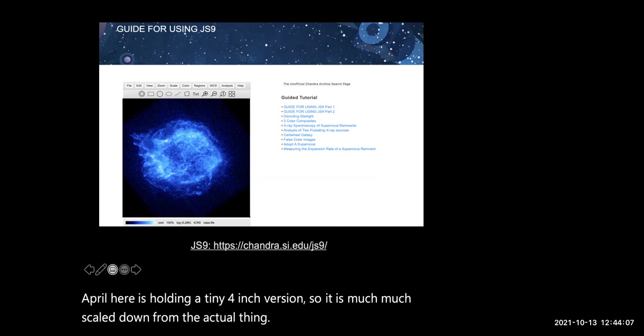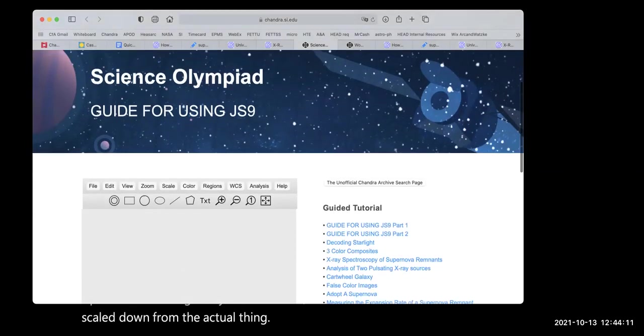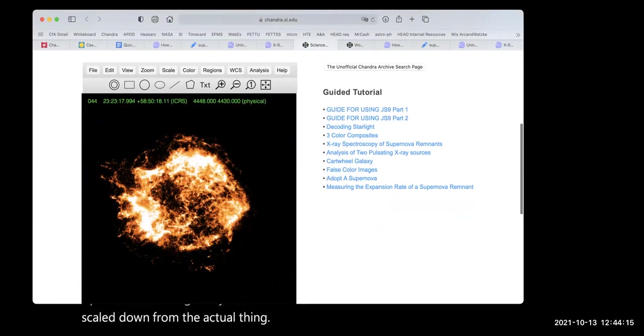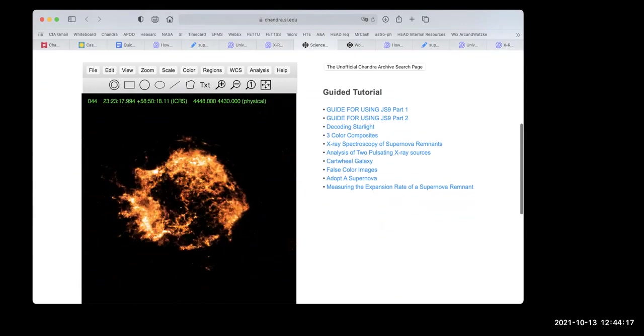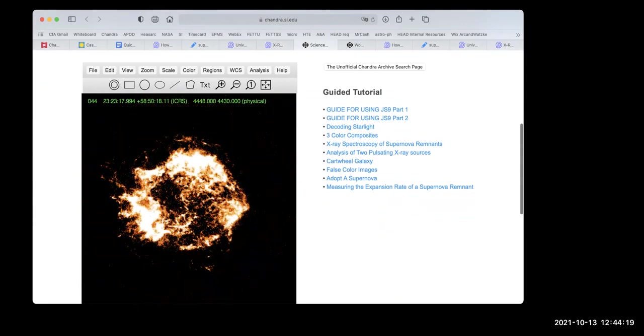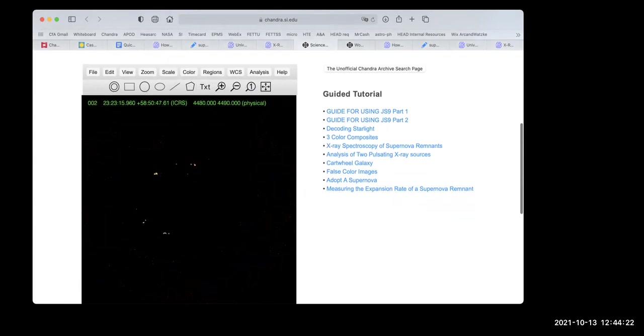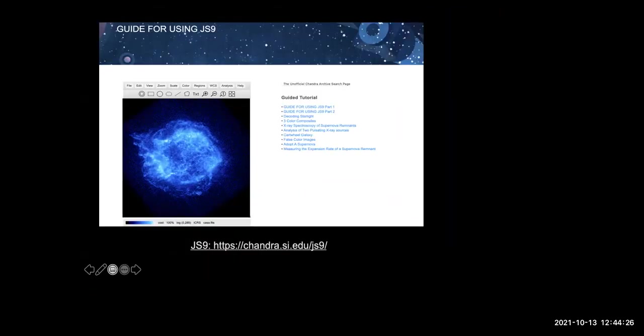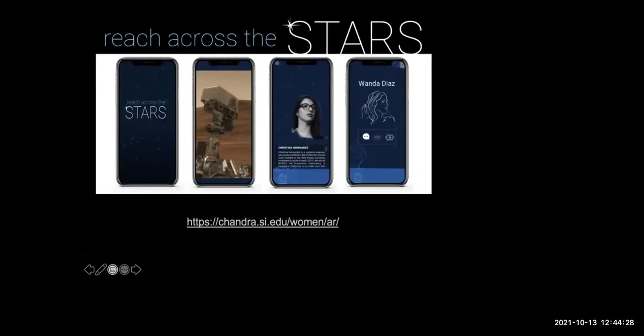And then if you have access to a 3D printer, you can download files and print models of supernovas, pulsars, even a Chandra spacecraft. So each section has images and videos about each object. JS9, I think we kind of briefly talked about, but it's an online data image analysis program used by professional astronomers and we have a student friendly version. And again, there are tutorials that explore the deep sky object in depth.